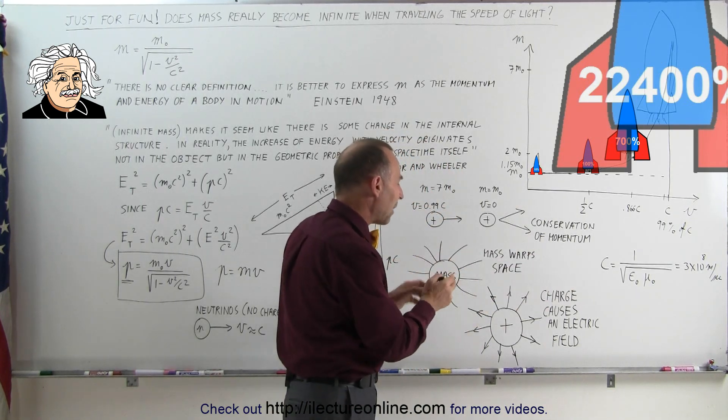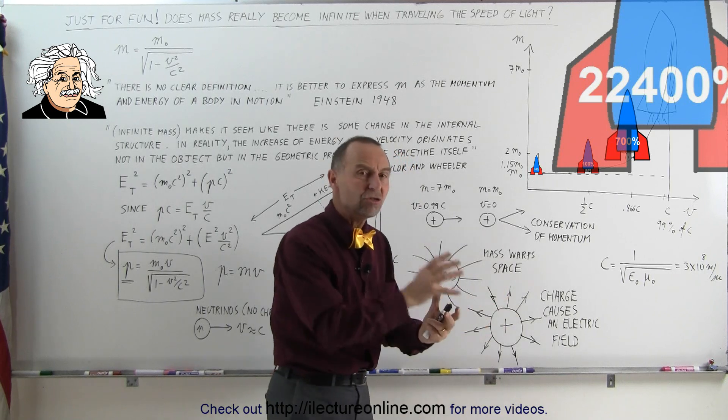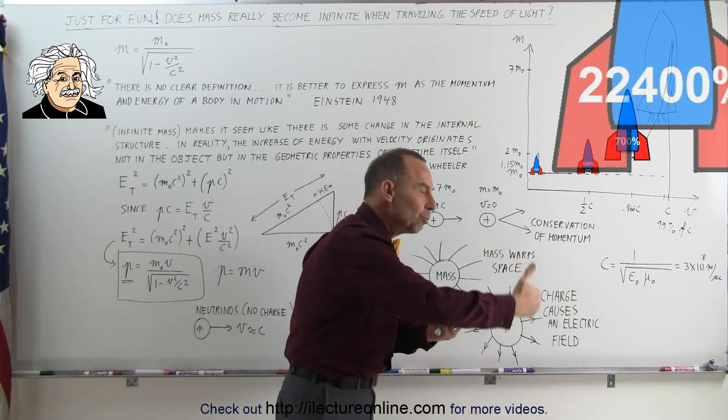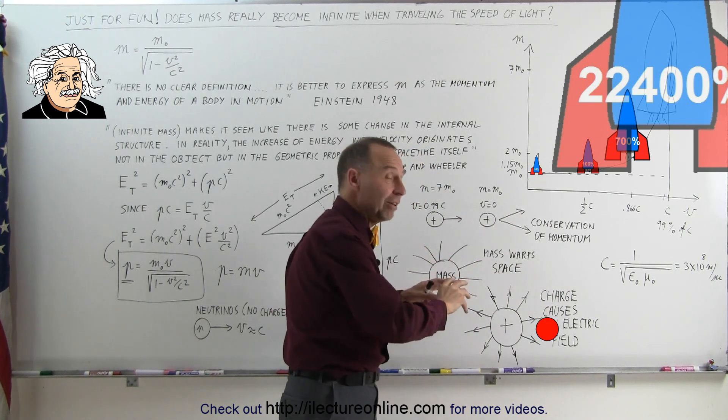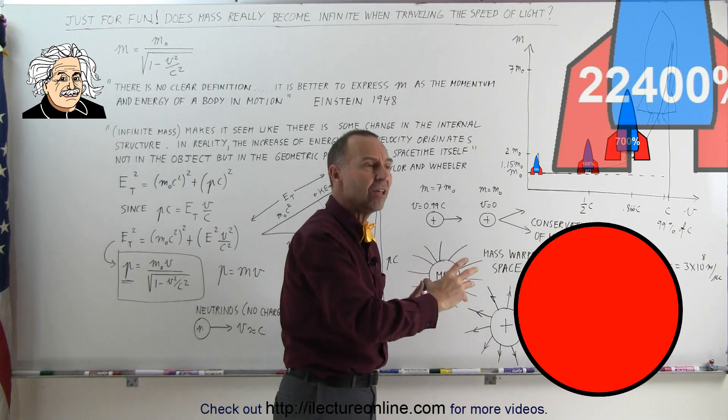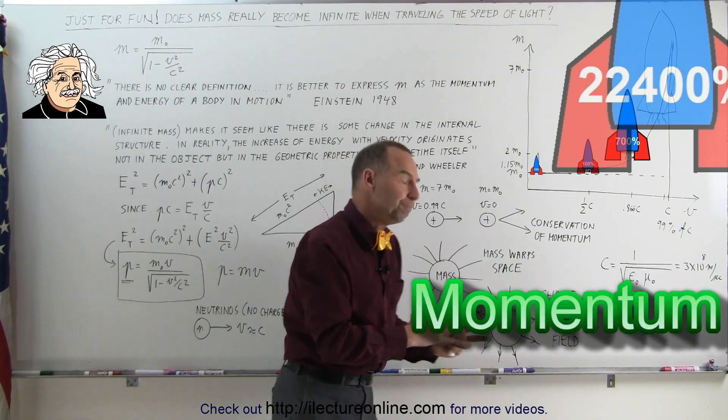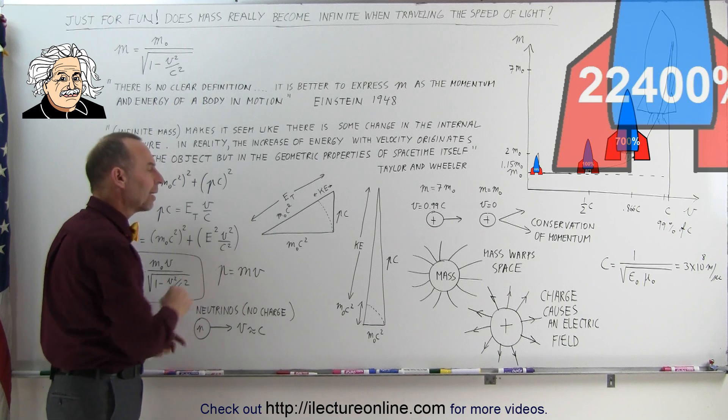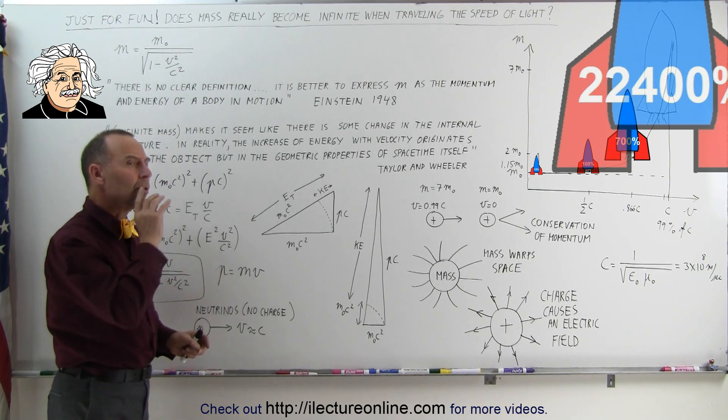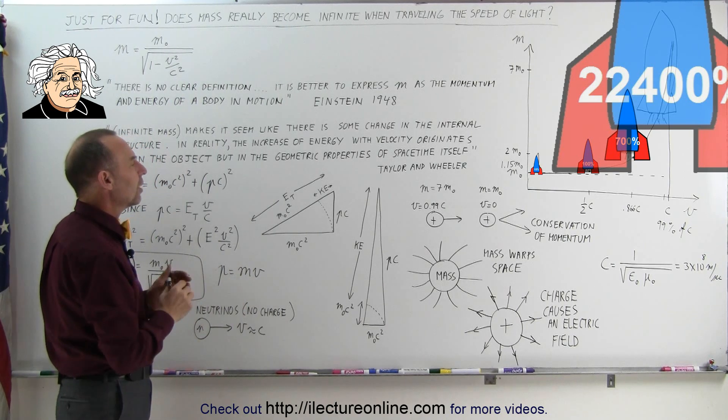So something must be happening to the object. More and more energy is required to get the object to move faster and faster, and it may appear as if instead of the object gaining mass, the object is gaining momentum. Again it's hard to understand because momentum is indeed the product of the mass times the velocity.